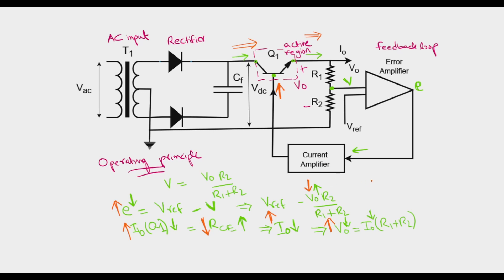So here we see that this is a negative feedback loop, negative feedback which is essentially regulating V0 to the changes in load conditions. This is the operating principle of a linear regulator.